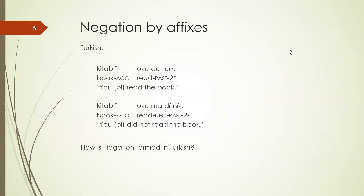So what do other languages do? Some languages do negation by affixes. Here are some examples in Turkish. You say 'kitabı okudunuz' — 'you read the book,' this is a plural in the past tense. The verb is formed by 'oku' (read) + 'du' (past tense) + 'nuz' (you, plural). The word for book is 'kitab,' which will be known to you all — it's originally an Arabic word spread throughout Asia and North Africa.